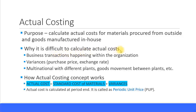Calculating actual cost is not straightforward because you can have various business transactions happening within the organization for those materials. Sometimes purchased materials might lose value or deteriorate. There are many different types of variances — for example, purchasing price variance, exchange rate variance, and cases where the invoice received from the vendor does not match the purchase order raised. All these variances have to be calculated for the actual costing of the materials.